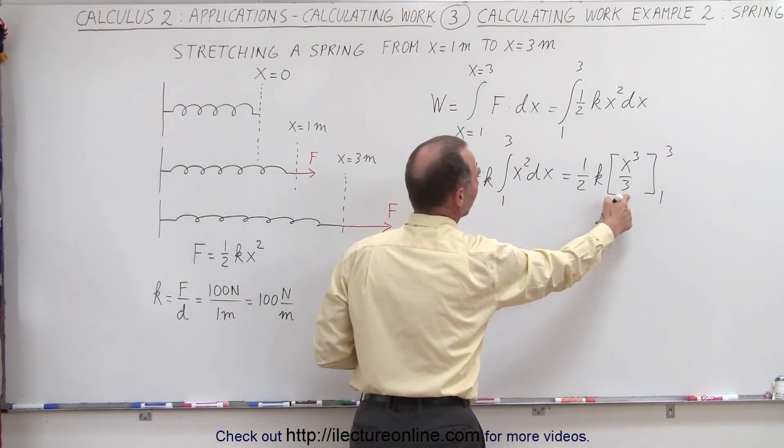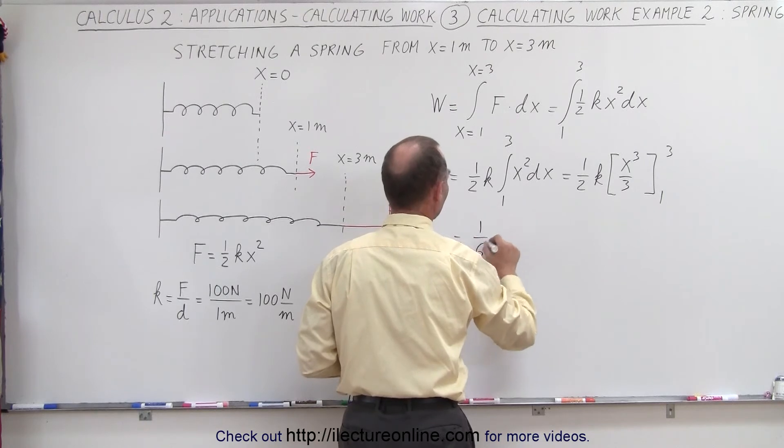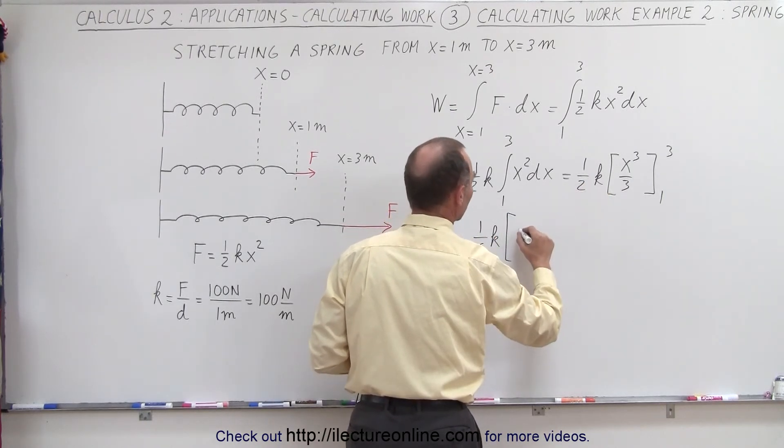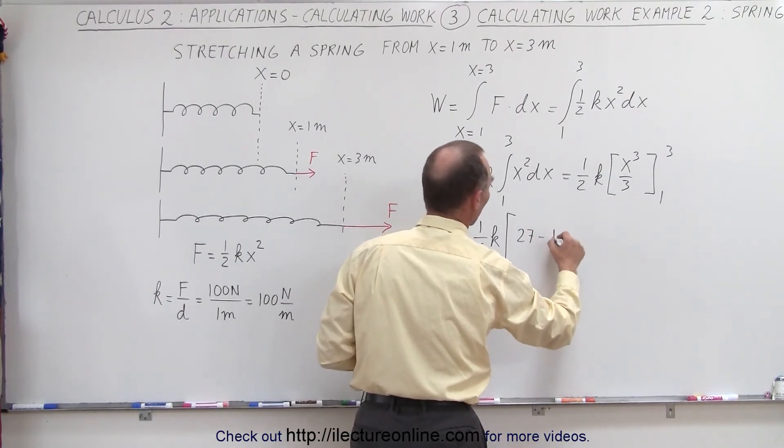So we can take the 3 out. So we can bring that over here. We have this is equal to 1 over 6 times k. When we plug in the upper limit, we have 3 cubed, which is 27, minus, when we plug in the lower limit, we get 1.